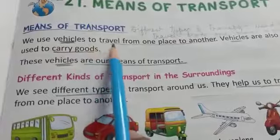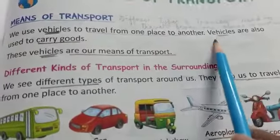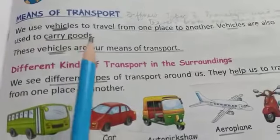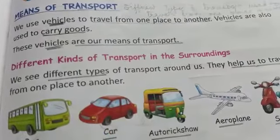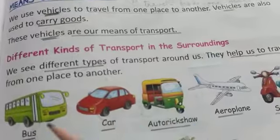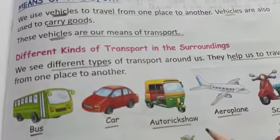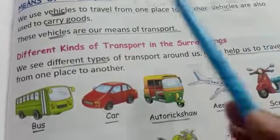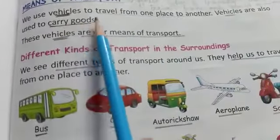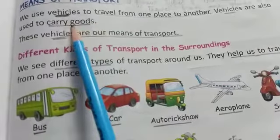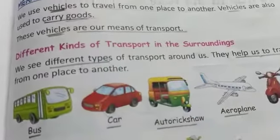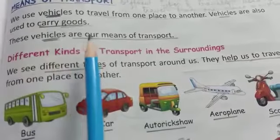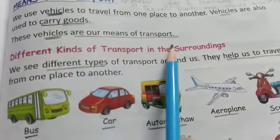We use vehicles to travel from one place to another. Vehicles are also used to carry goods. To go from one place to another, if it is far away, we take the help of vehicles because we reach there easily. Vehicles are also used to carry goods — goods means saman. Saman bhi ek jagha se dousre jagha pahunchane ke liye vehicles kaafi madat karte hai. These vehicles are our means of transport.